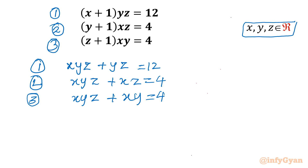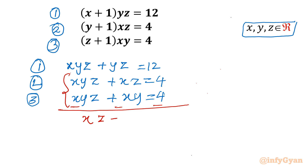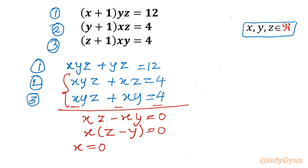Notice that equations 2 and 3 both have xyz on the left and 4 on the right. So I will subtract equation 3 from equation 2. The xyz terms and the 4s cancel, leaving xz − xy = 0. Taking x common: x(z − y) = 0. So either x = 0 or z = y.